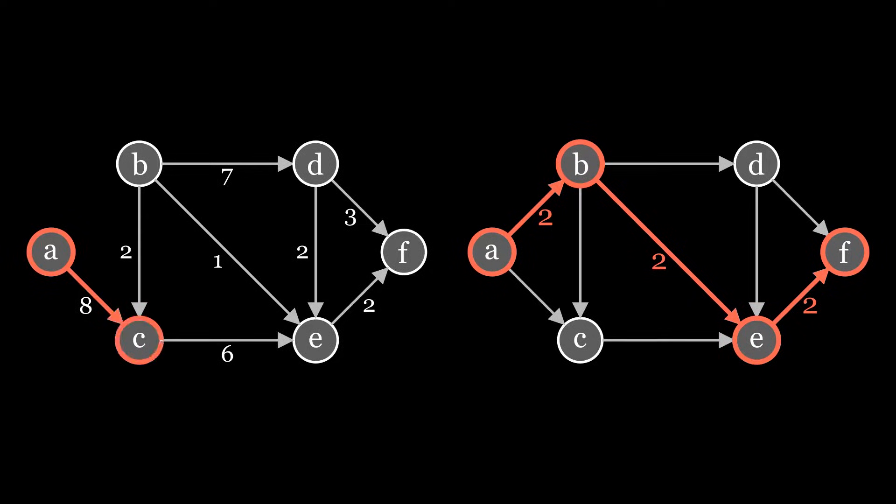Now we consider a new path, find the bottleneck and add the new flow to the graph on the right. Once again, we compute the residual graph.